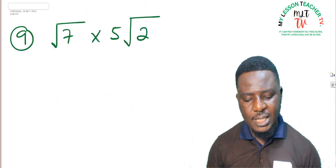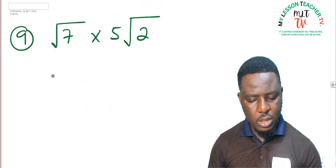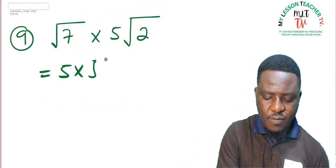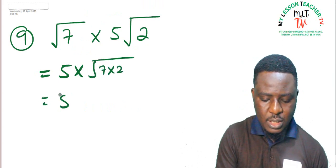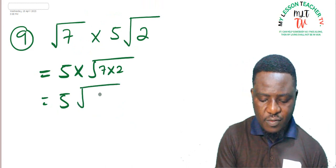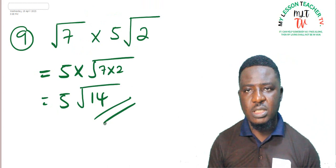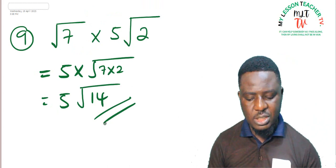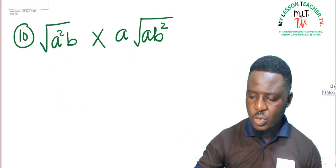Question 9: root 7 times 5 root 2. Both are in basic surd form. This becomes 5 times root 7 times 2 = 5 root 14. Since 14 cannot be expressed in a simpler surd form, the answer is 5 root 14.